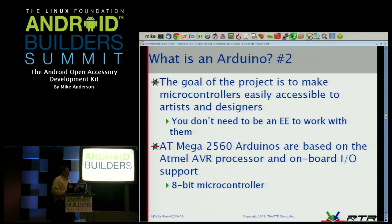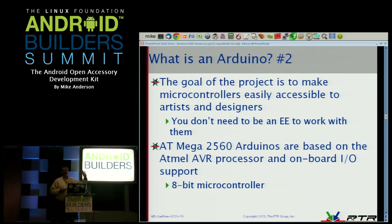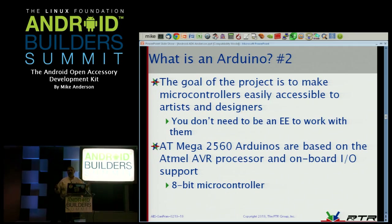Because it's trying to make things easily accessible to artists and designers, they really focused on making this dirt-simple — and that's one of the significant reasons why Google picked this environment to focus the ADK. The standard AVR processor on the Arduino is an 8-bit microprocessor, going back to the 1970s, not having a whole lot of memory or program storage to work with. This is not something you're going to be running Java on. The language they use on the Arduinos is a derivative of C++, basically C with classes, and the compiler they use is the GNU AVR compiler.